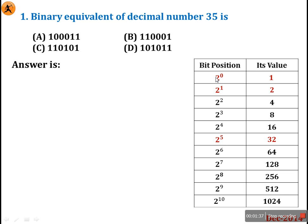These are the bit positions. You already know that computers are represented in binary systems — either 0 or 1. The combinations are powers of 2: 2 raised to 0 is 1, 2 raised to 1 is 2, 2 raised to 2 is 4, 2 raised to 3 is 8, and similarly 2 raised to 10 is 1024. Just remember this table — it is very helpful not only for this type of question but for almost all computer questions, including first paper in CSIR or UGC exams.